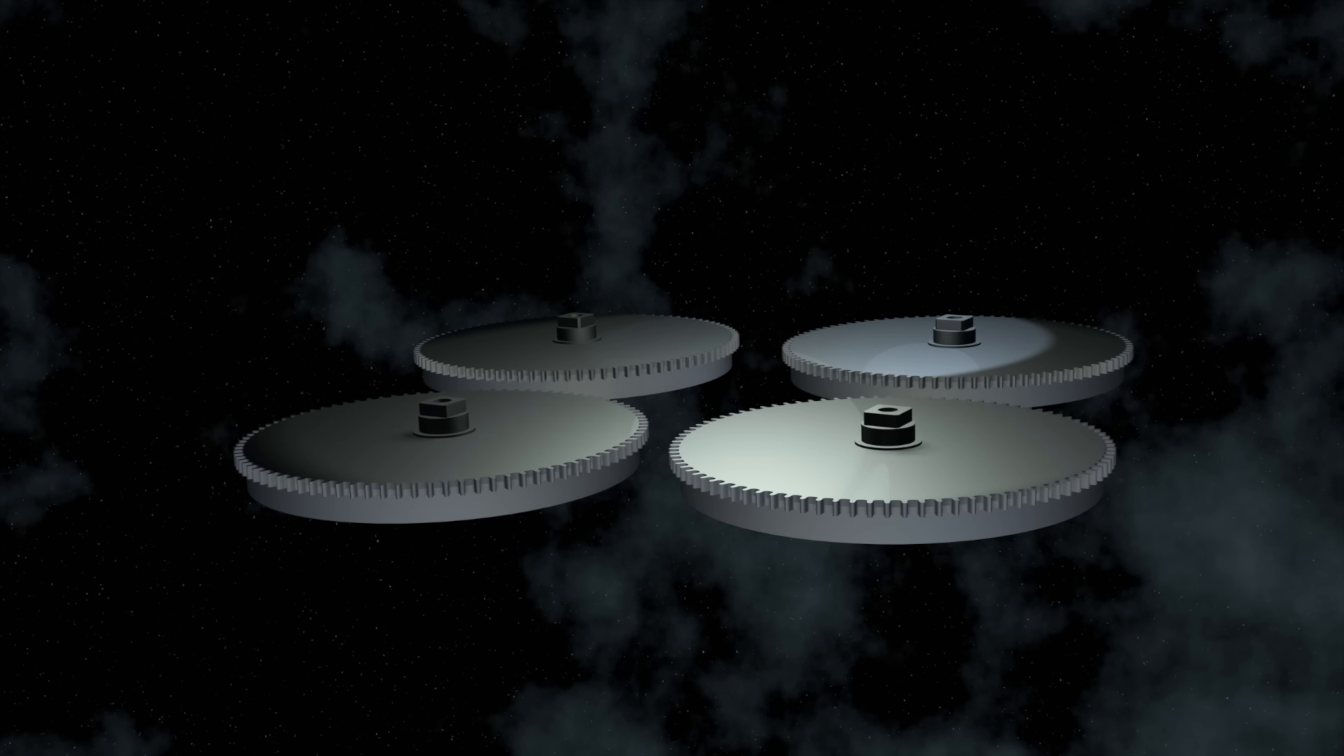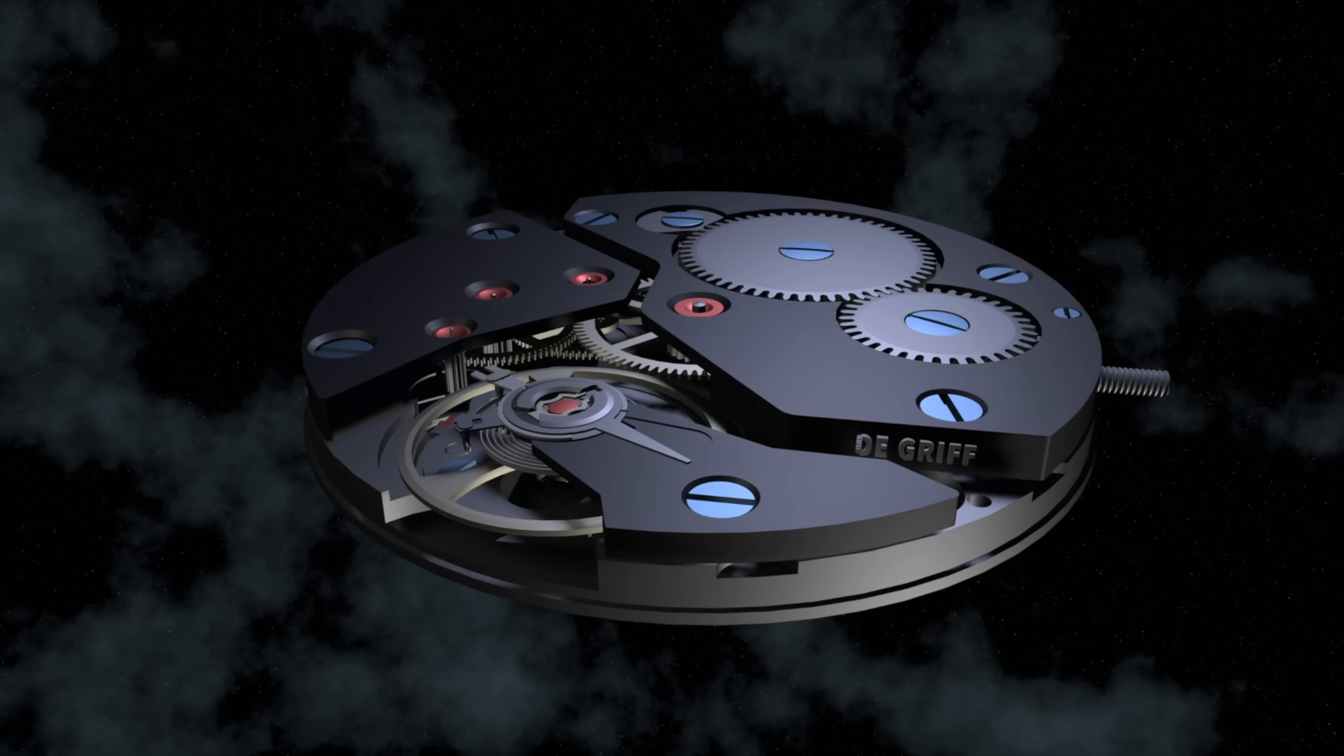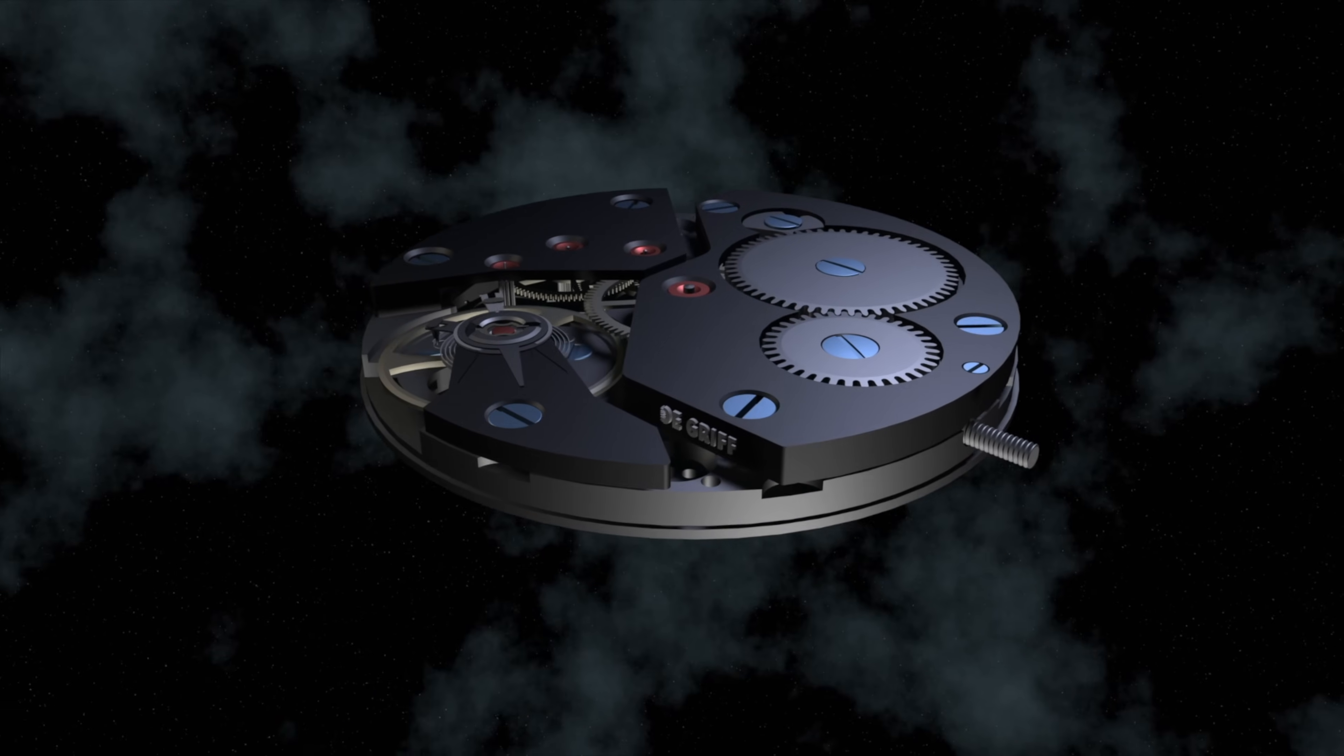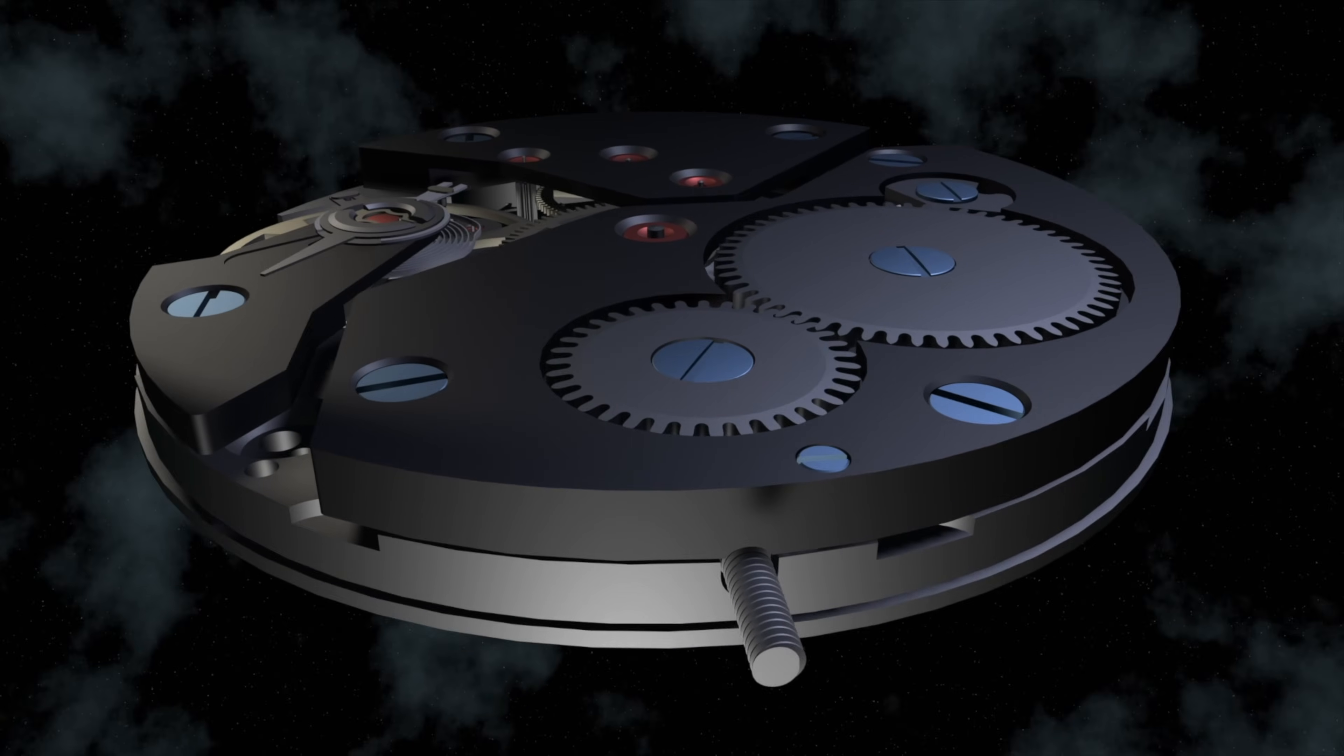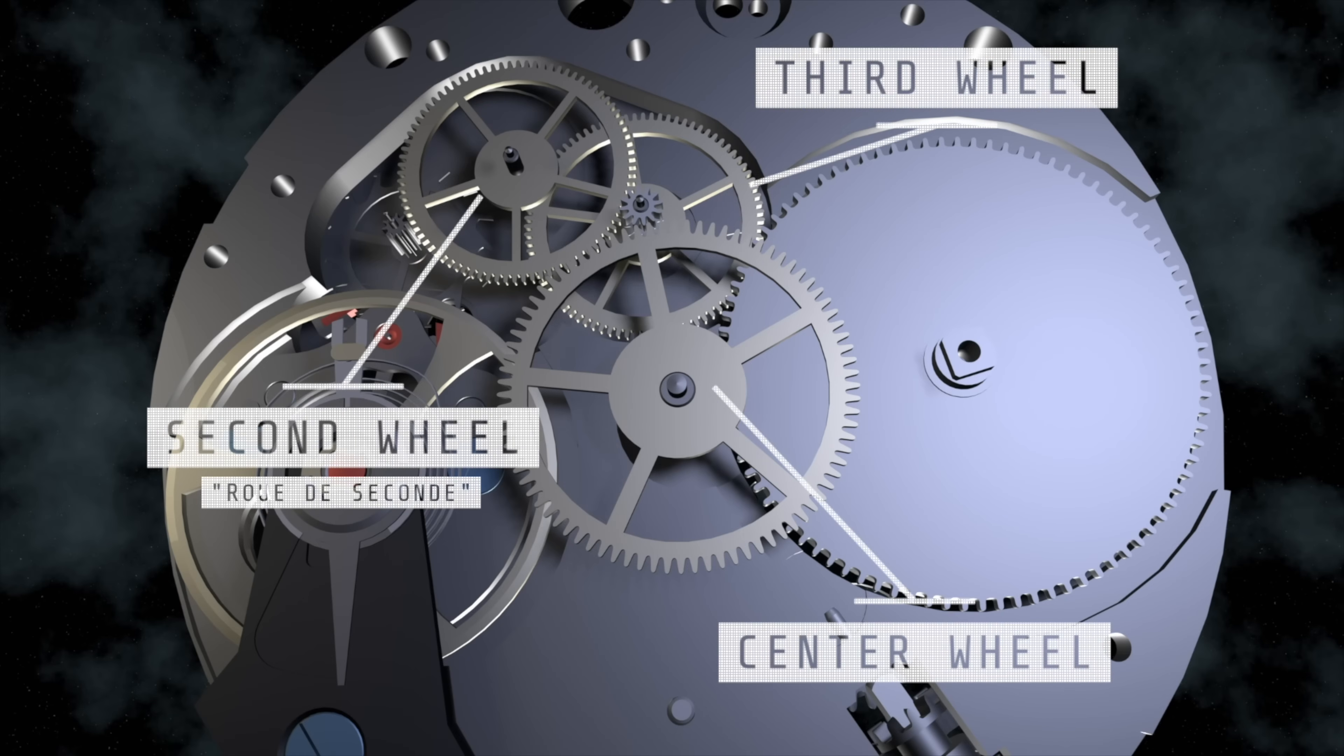This refers to the number of barrels or mainsprings a movement has. Now the more energy is needed, the more complications that need to be powered, the more barrels you might find on a movement. Note that the vast majority of watch movements have just one single barrel. Now you have all that energy stored in the barrel, yet all that energy wants to do at this point is escape from that same barrel.